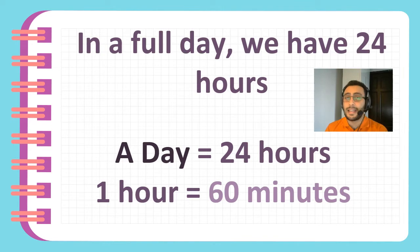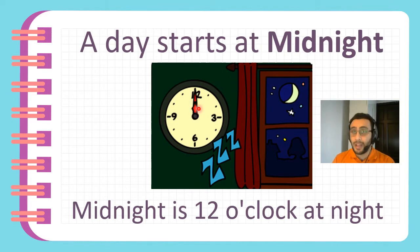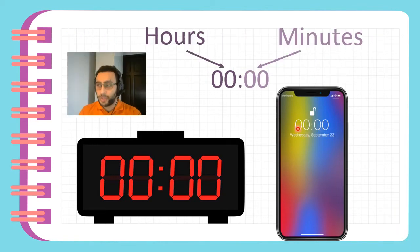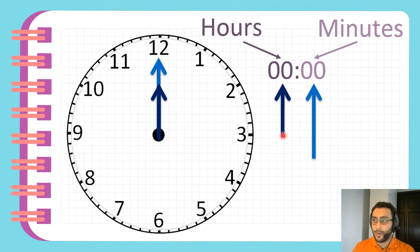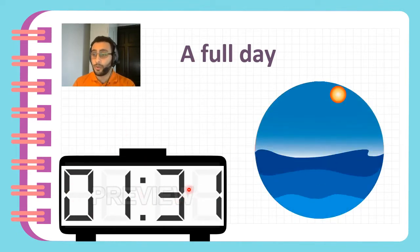A day starts at midnight. It's 12 o'clock at night — that is called midnight, and that is the start of a new day. On a 24-hour clock, the start of the day looks like this — it shows 0000. Or if you have a phone, it also shows like this. The two numbers on the left are the hours, the short hand, and the two numbers on the right are the minutes, the long hand. So the start of the day is at 0000, and it goes all the way to 24 on a 24-hour clock.